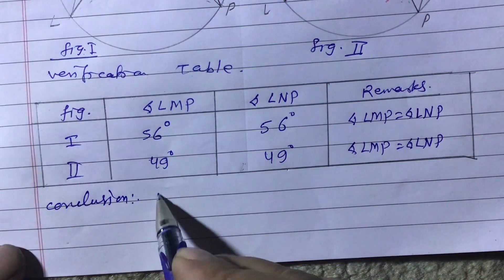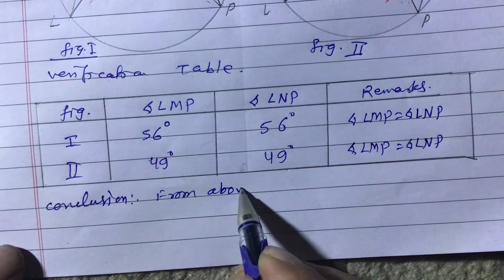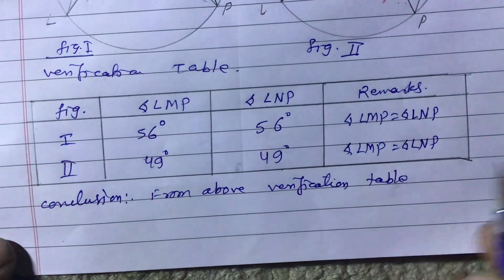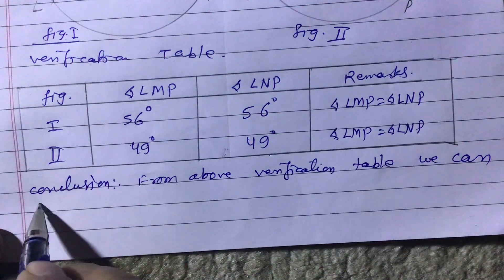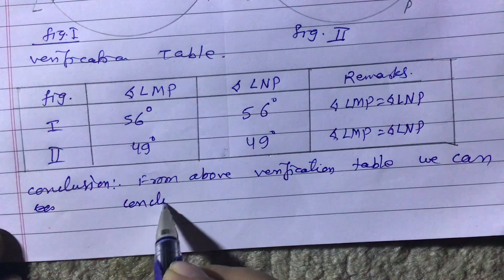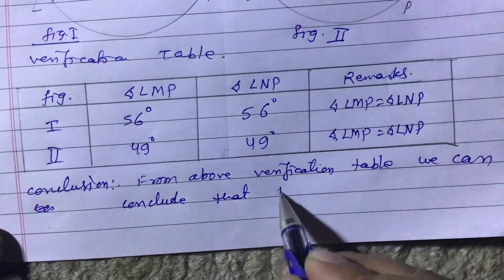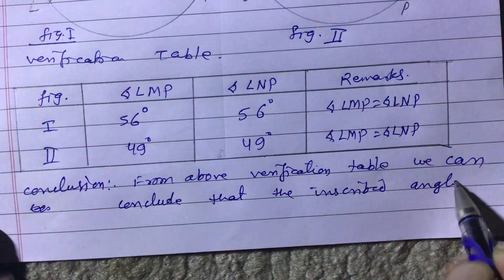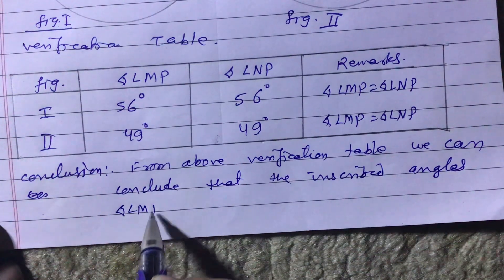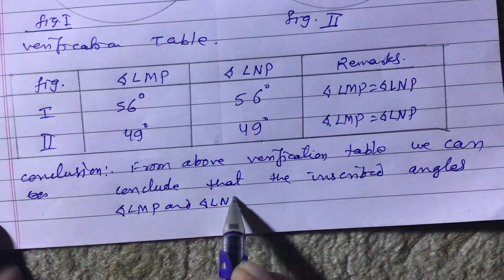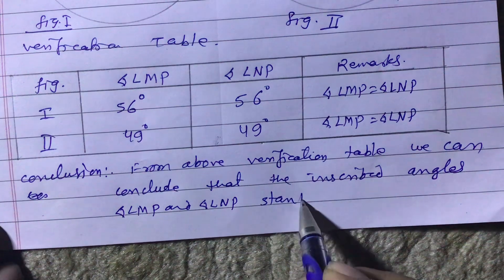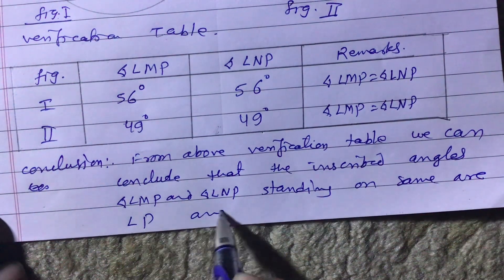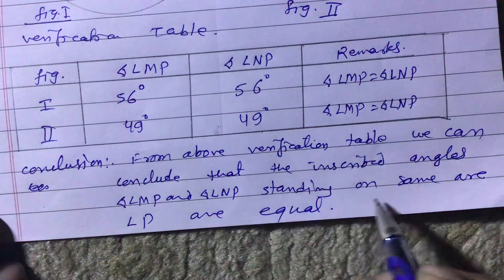Now we write the conclusion. From the above verification table, we can conclude that the inscribed angles LMP and LNP standing on the same arc LP are equal. Thank you for watching this video.